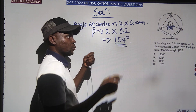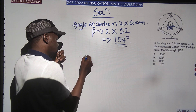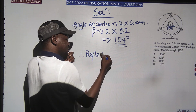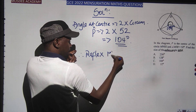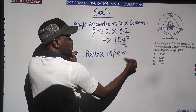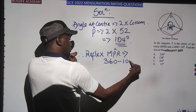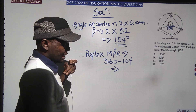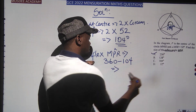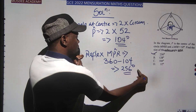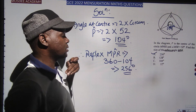If the non-reflex angle is 104° and everything at a point is 360°, then the reflex MPR equals 360 minus 104, which gives 256°. The answer is 256°.